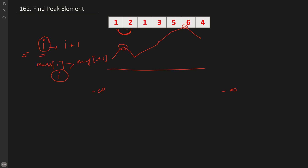For example: is 1 greater than 2? No. Is 2 greater than the next 1? Yes, so we return index 1. For the worst case like [1, 2, 3, 4], we run the loop only while i < n-1 so the last element isn't covered. Once we reach the end without returning, we return nums.length - 1, the index of the last element.